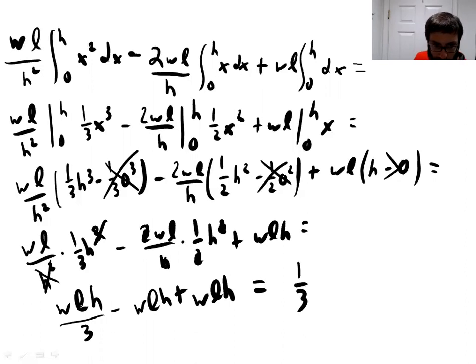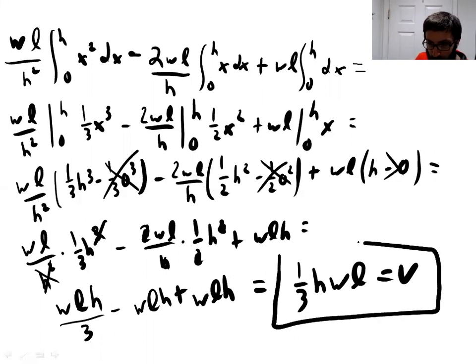So we end up with one-third HWL, which is our volume. And that is the formula that is known from basic geometry. But there it is proven using calculus by adding up these rectangular prisms. Thank you.